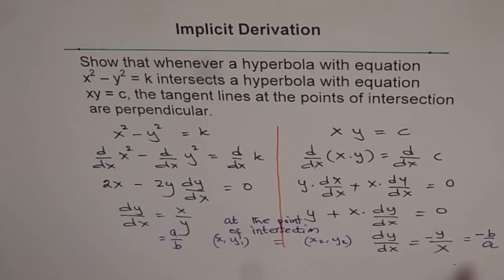Now if I multiply these two slopes, I get minus one. That means the lines are perpendicular. So that is how we are going to solve this problem.